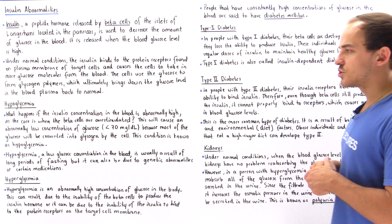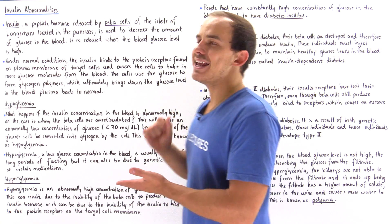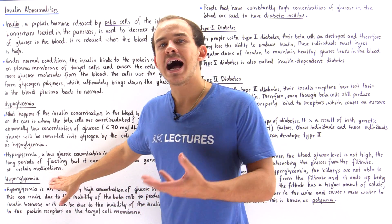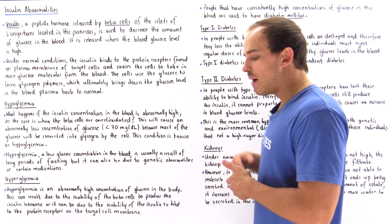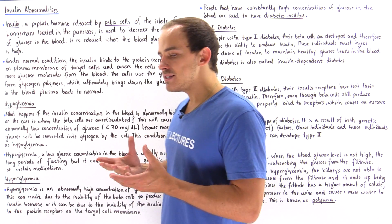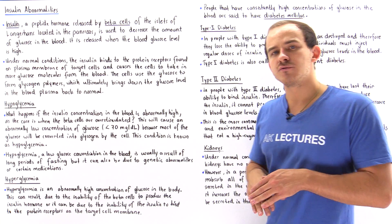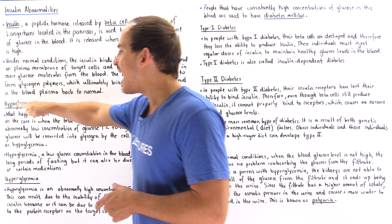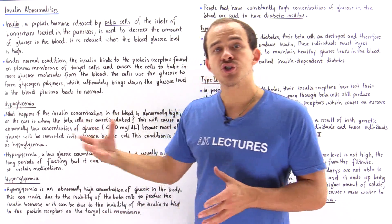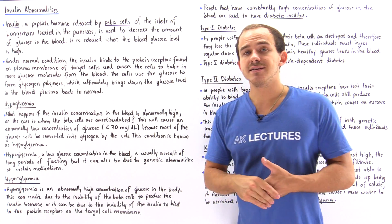In this lecture we'll focus on two important abnormalities with respect to glucose and insulin: hypoglycemia and hyperglycemia. Hypoglycemia is an abnormally low concentration of glucose inside our blood. The prefix 'hypo' simply means a low amount of, and 'glycemia' refers to glucose, so hypoglycemia means a low concentration of glucose inside our blood.